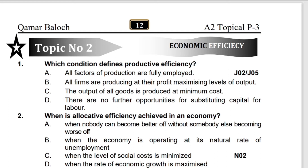This question is really simple and is based on the definition of productive efficiency. You can pick Option C — that all goods are produced at minimum cost, meaning average cost of production is minimized.